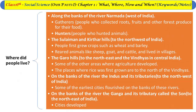The third topic is where did people live. People lived along the banks of the river Narmada, to the west of India. People lived at the Sulaiman and Kirthar hills to the northwest. People lived at the Garo Hills to the northeast, and the Vindhyas in central India. Along the banks of the river Narmada, gatherers and hunters lived — gatherers collected roots, fruits and forest produce. At the Sulaiman and Kirthar hills, people first grew crops such as wheat and barley, reared animals like sheep, goat and cattle, and lived in villages.